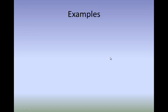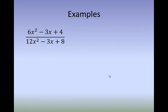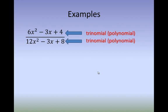Let's have some examples. 6X squared minus 3X plus 4 over 12X squared minus 3X plus 8. We can consider this one as a rational expression. As you can see, the numerator is a trinomial and also the denominator is a trinomial. So this is a polynomial over a polynomial, which is a rational expression.